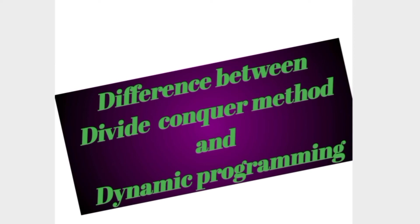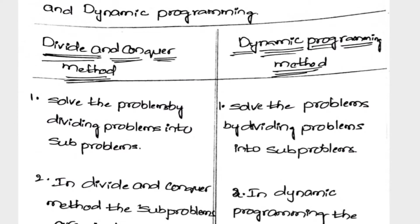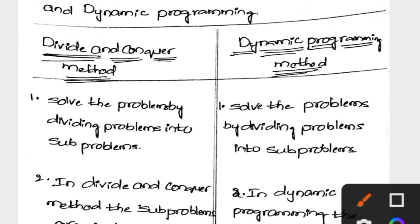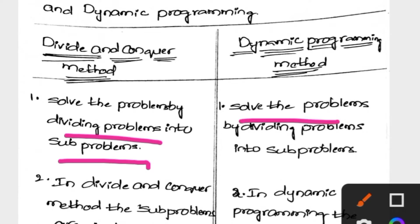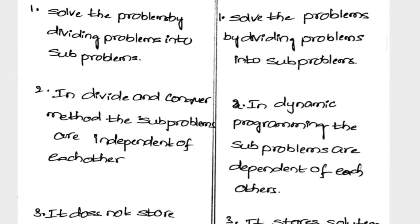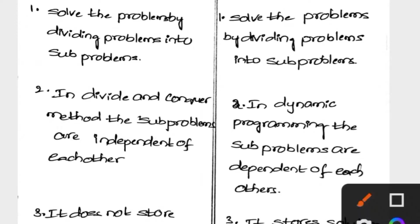Today I am going to explain the difference between Divide and Conquer method and Dynamic Programming. In Divide and Conquer, if we are going to solve a problem, first the problem is divided into small sub-problems. Similarly, in Dynamic Programming, we also divide the problem into small sub-problems.